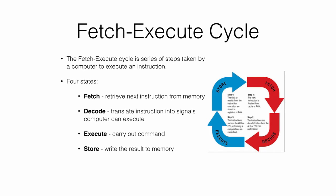The speed of a computer is limited by many factors, one of which is the number of instructions that can be executed by the CPU at any given time. Generally, each part of the CPU can only perform one single task at a time, so all processing in a single-core CPU must be done sequentially.